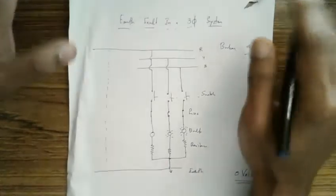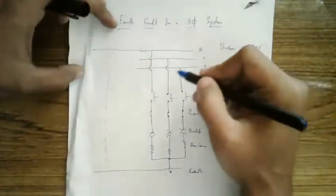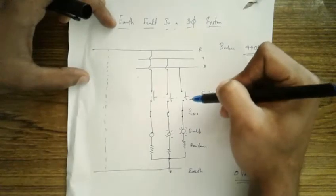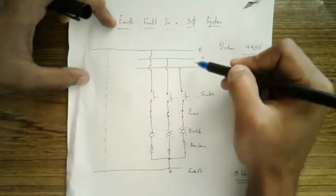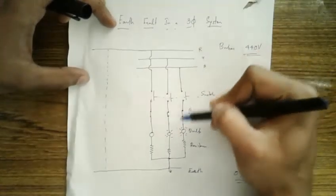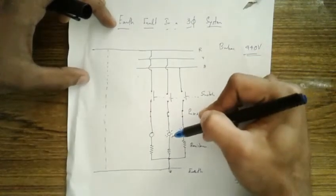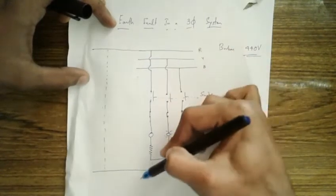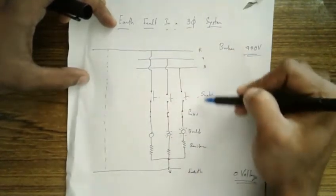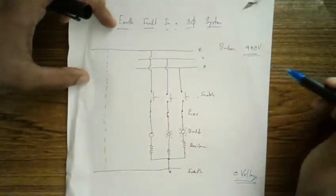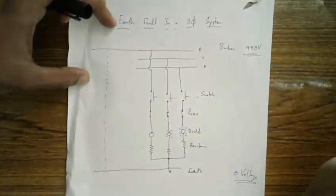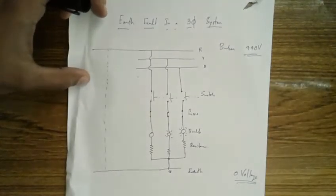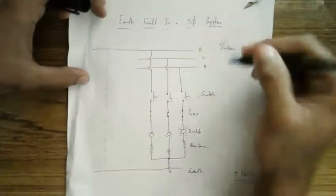This is the same case for Y as well as B. If there is a leakage on Y, that bulb will not glow because the current finds another easiest path. The same applies for R, Y, and B - that's it about earth faults in a three-phase system.